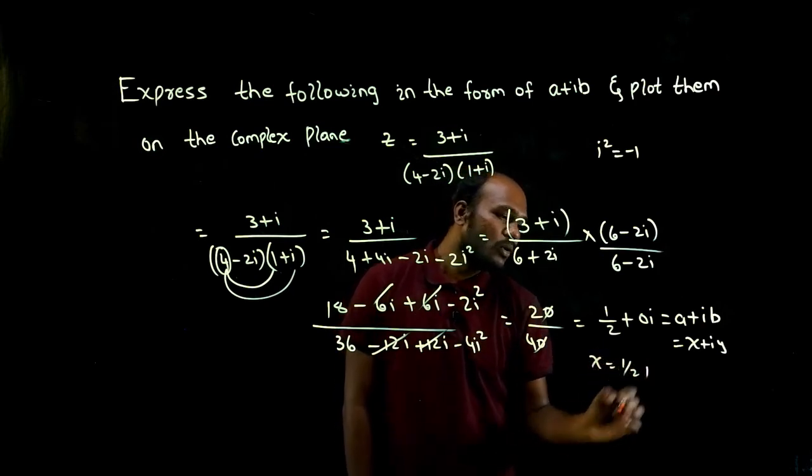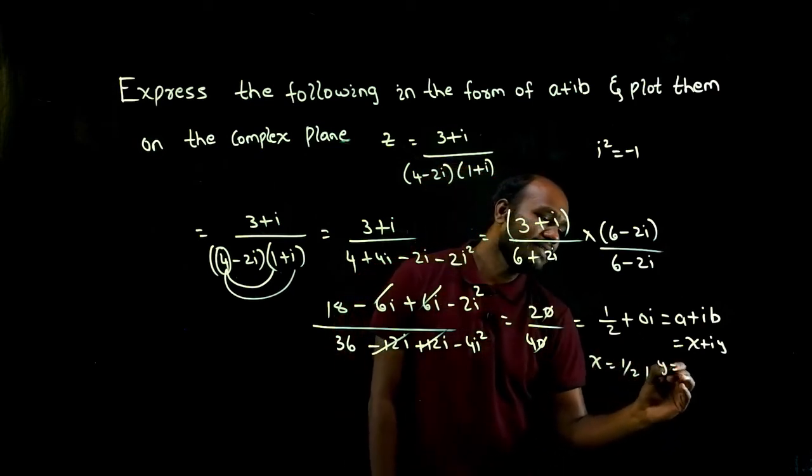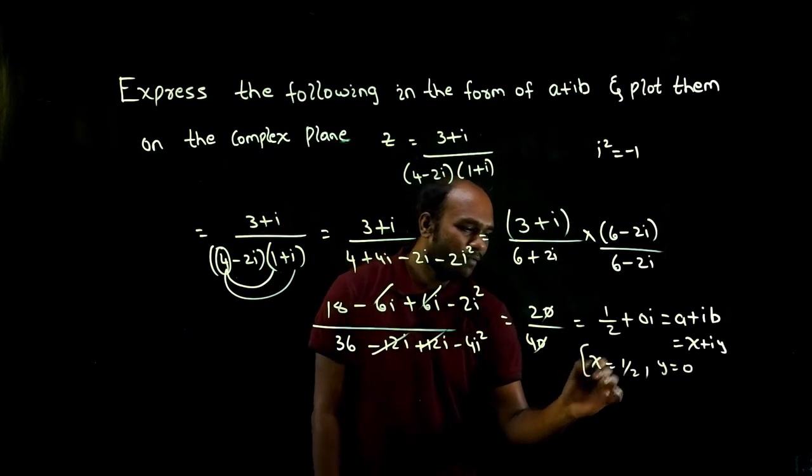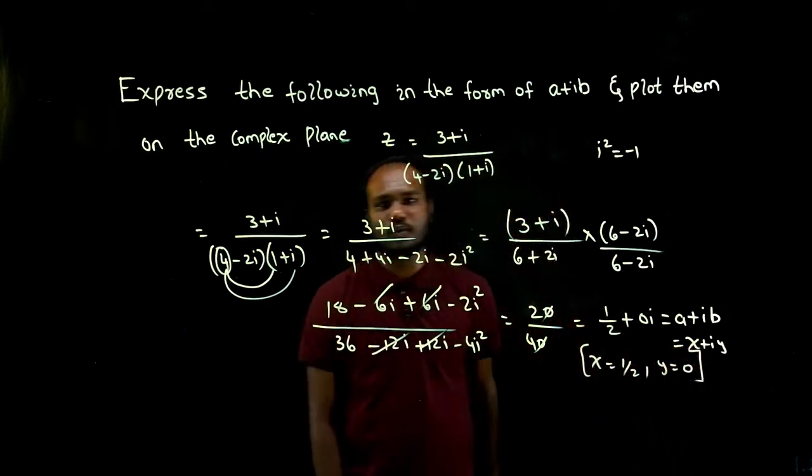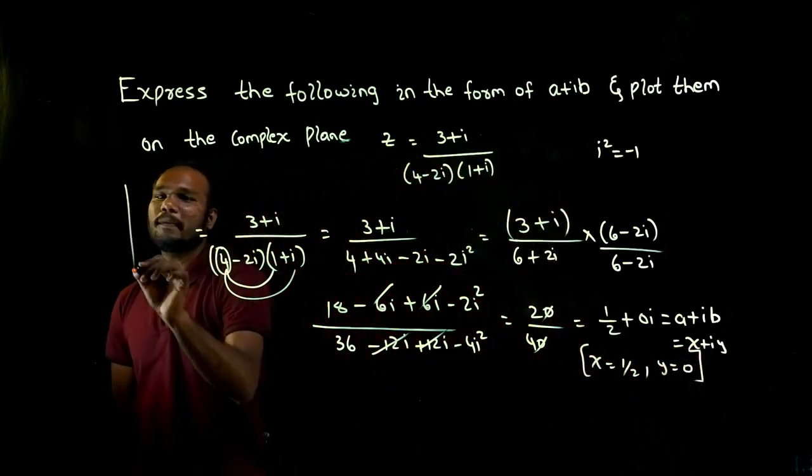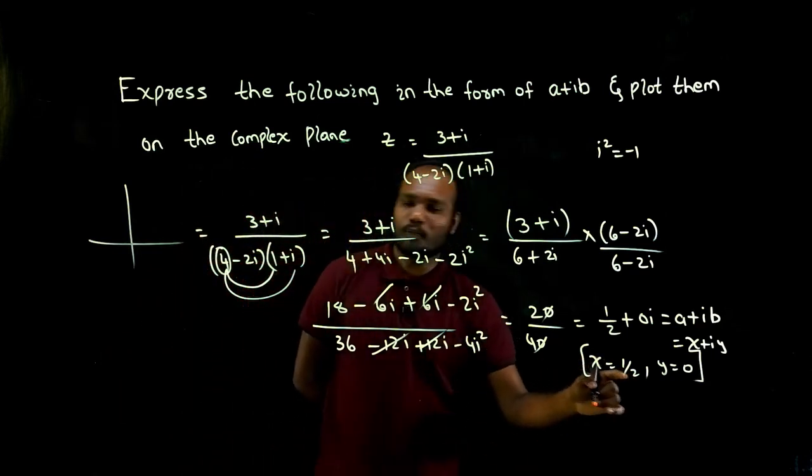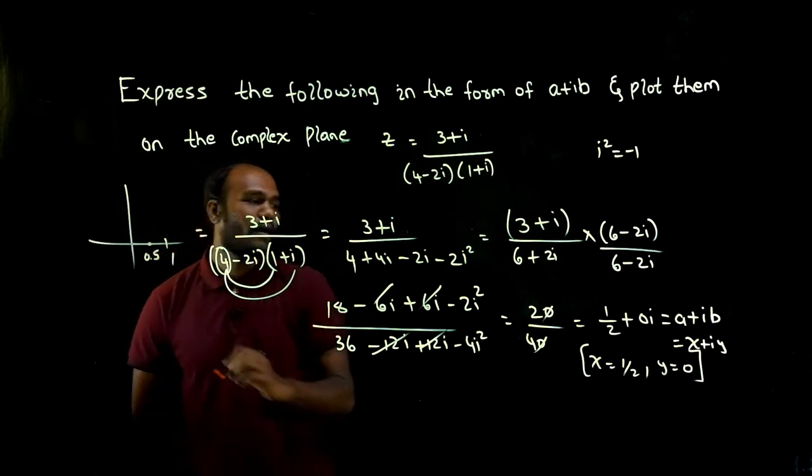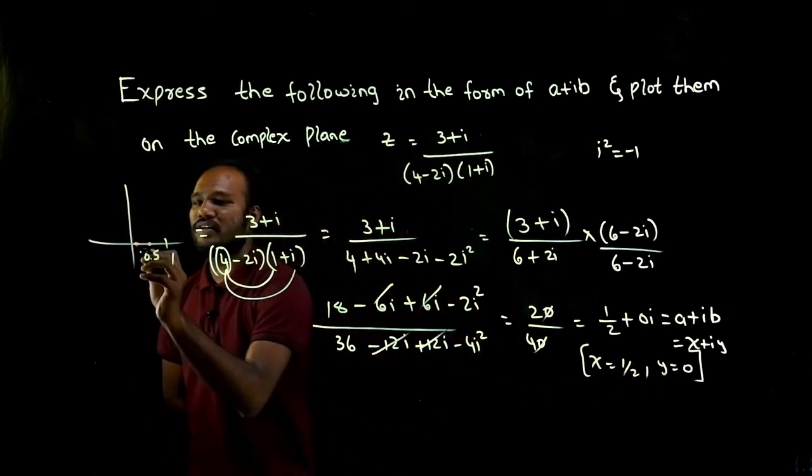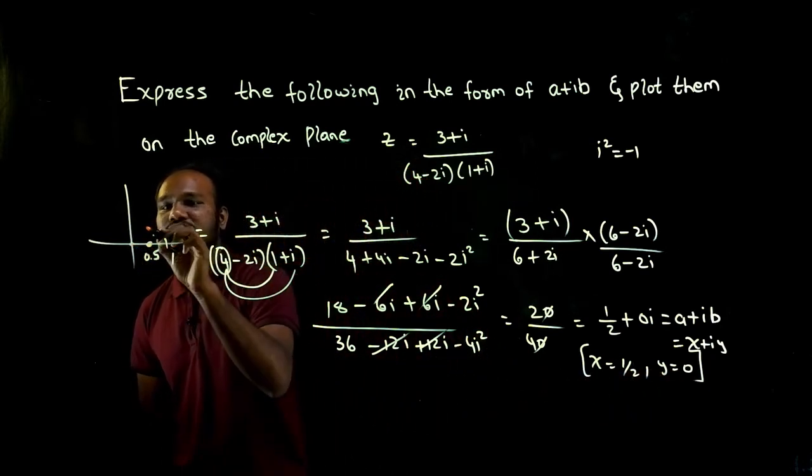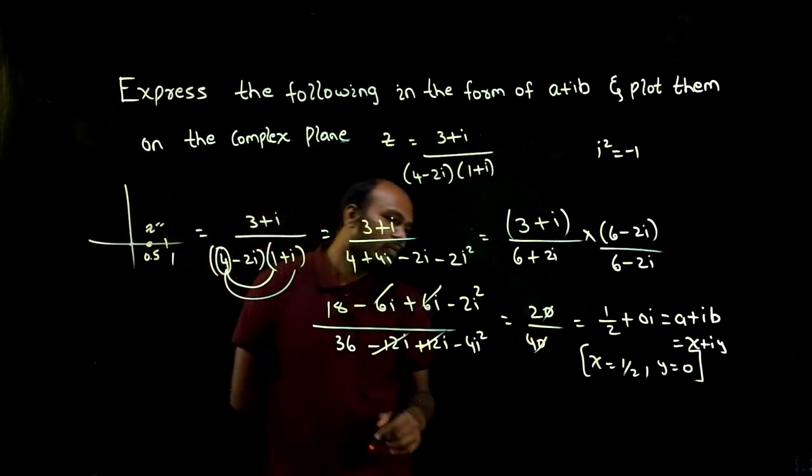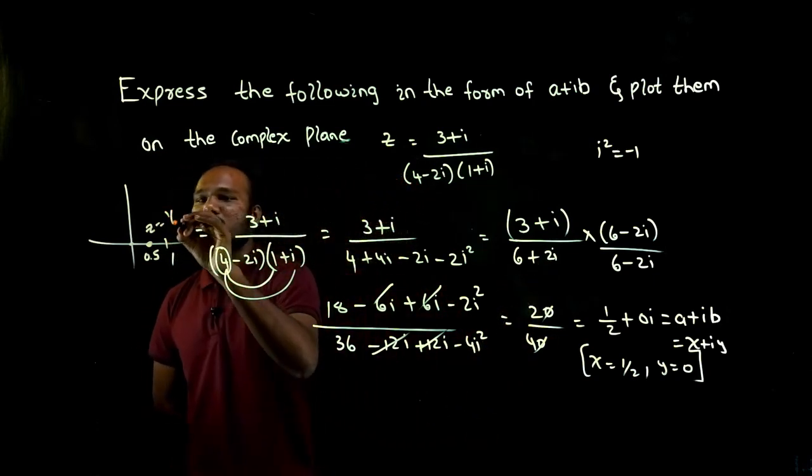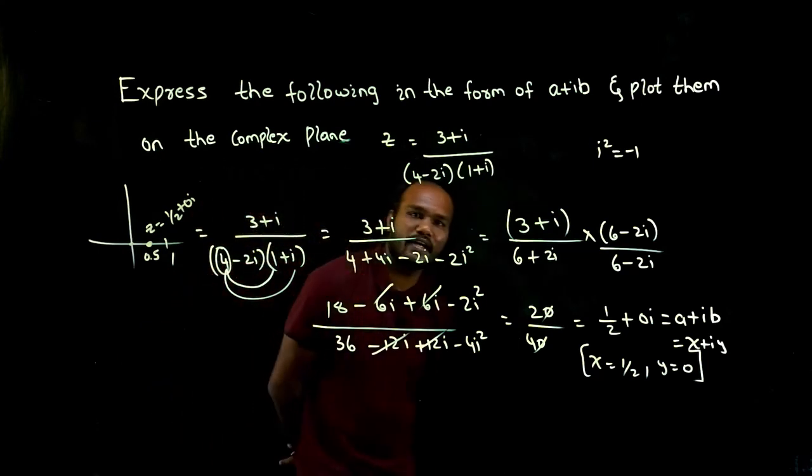What is the x value? x value is 1 by 2. What's the y value? y value is 0. If I want to draw the argand plane or the complex plane, the x value I need is 0.5, so this is 1, this will be 0.5, and the y value is 0. So it is somewhere here. This itself is the z value: 1 by 2 plus 0i.